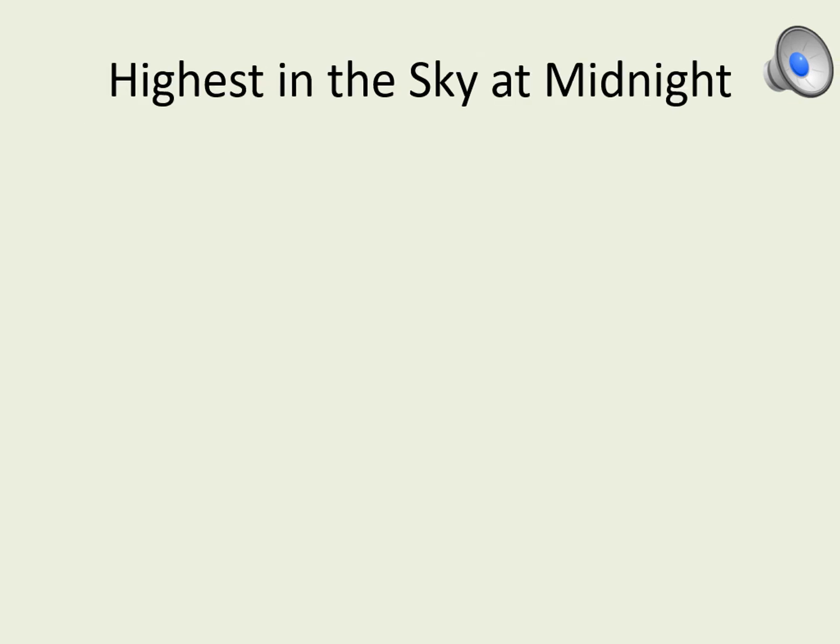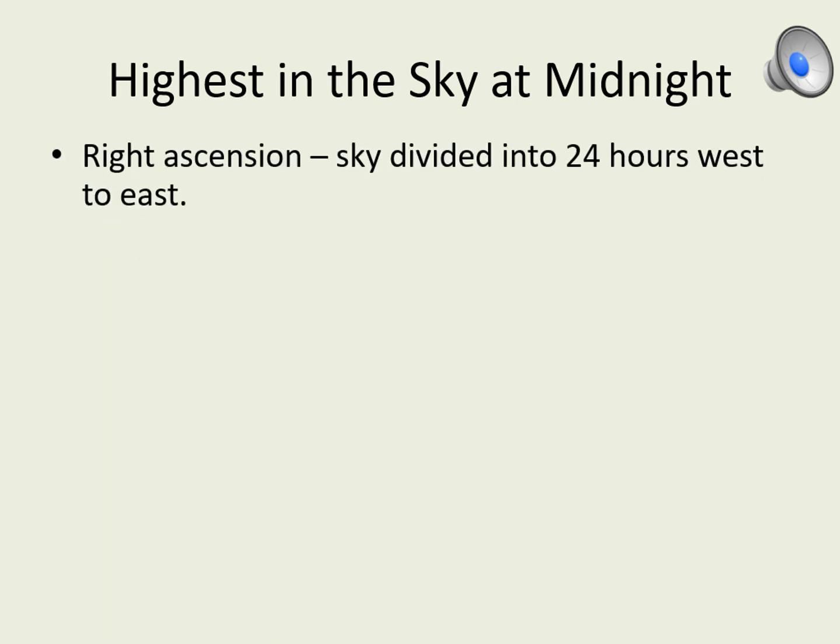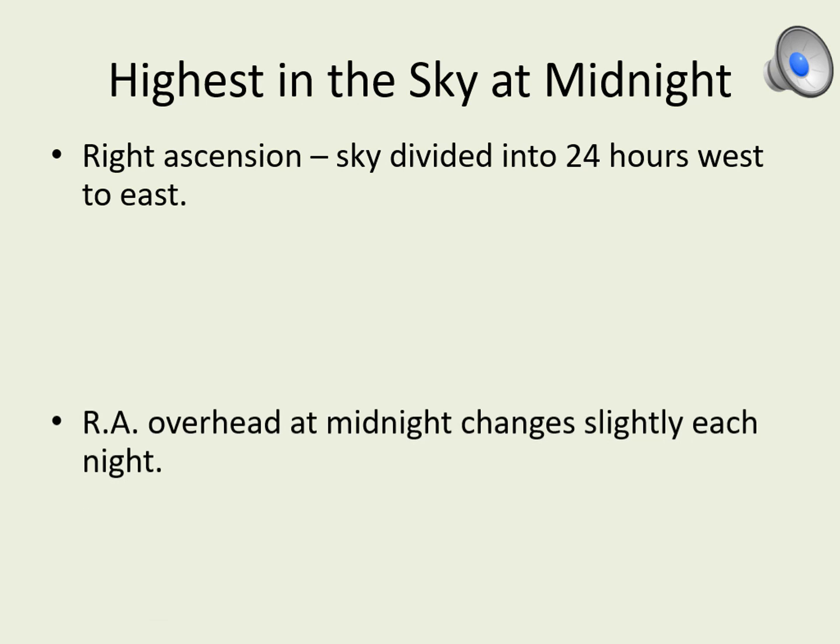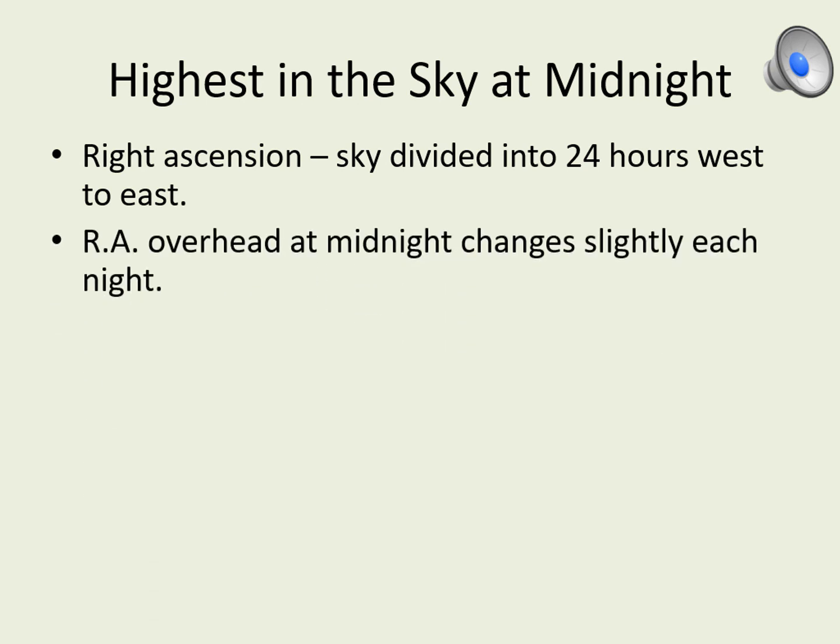While declination tells you how far north or south in the sky the star is, right ascension tells you how far east of a particular point the star is. Right ascension divides the sky up into 24 hours. Moving west to east, each hour of the night the Earth's spin causes the sky to shift by roughly one hour of right ascension overhead. The right ascension that's overhead at any given time of night, such as midnight, also changes gradually through the year as the Earth moves around the sun.